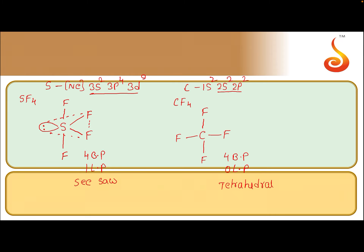For XeF4, xenon is the central atom. Xenon is a group zero element with an outermost configuration of ns2 np6 — an octet configuration. However, empty nd orbitals are also available, so we can excite electrons to create the required number of unpaired electrons. With four unpaired electrons, xenon forms four bonds with four fluorine atoms.